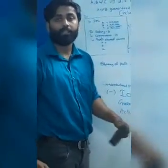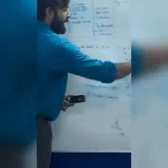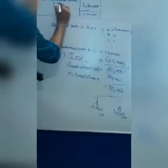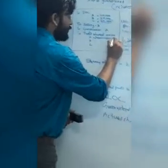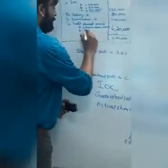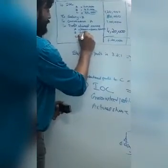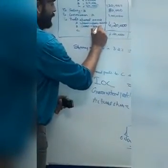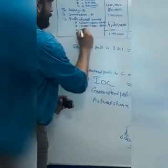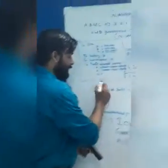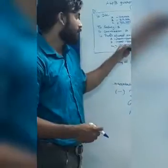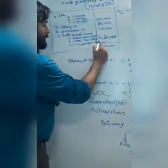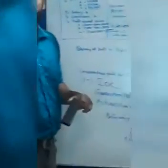A should give 6,000 to C, and B should give 4,000 to C. Now, A's share of profit will be 2 lakh 10,000 minus 6,000 equal to 2 lakh 4,000. B's share of profit equal to 1 lakh 40,000 minus 4,000 - 1 lakh 36,000. And C's share of profit will be 70,000 profit and the 10,000 from A and B, so he will get total 80,000. And the total will be 4 lakh 30,000.